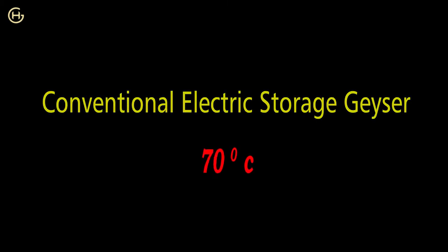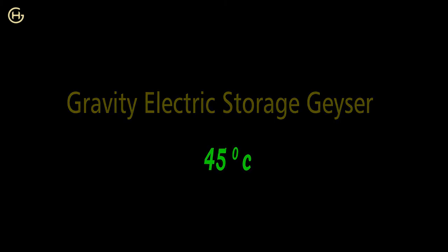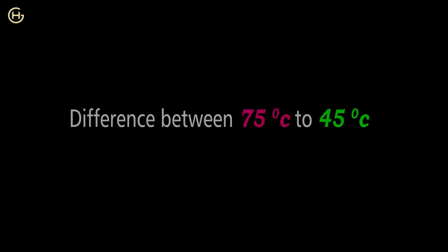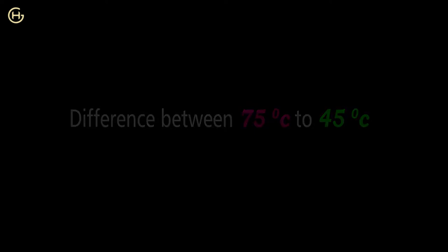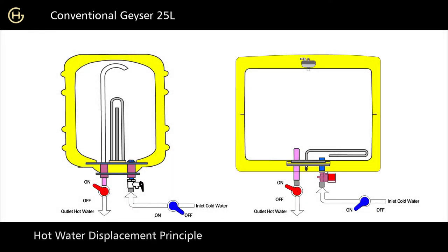In a conventional electric storage geyser, to get average 45-degree hot water of 25 liters, we have to heat it up to 70 degrees. In our gravity electric storage geyser, to get average 45-degree hot water of 25 liters, we only have to heat it up to 45 degrees. The electricity consumption difference between 75 and 45 degrees is the saving. We will have a detailed understanding of concepts in the following videos.